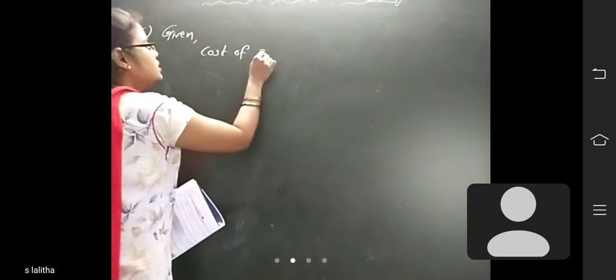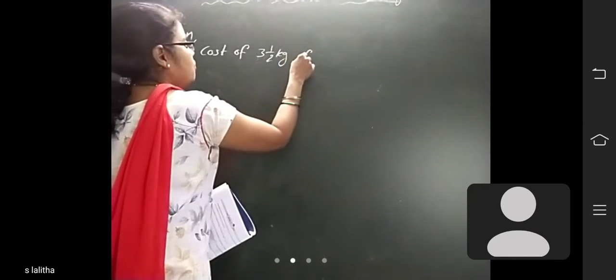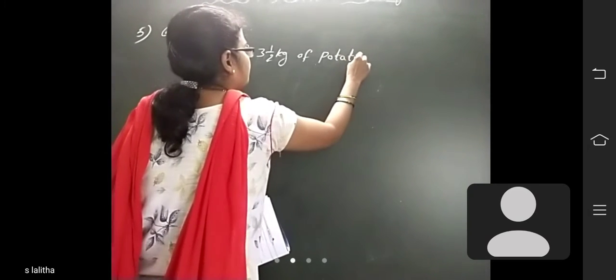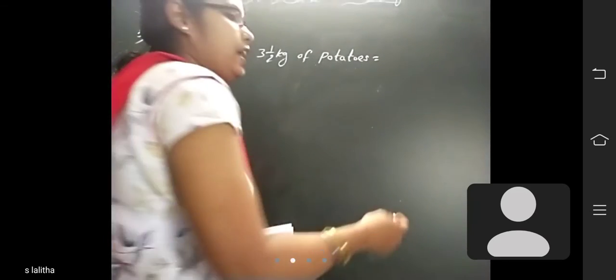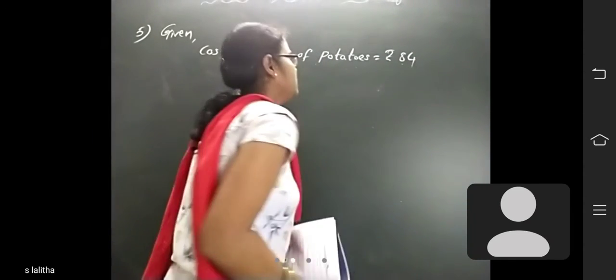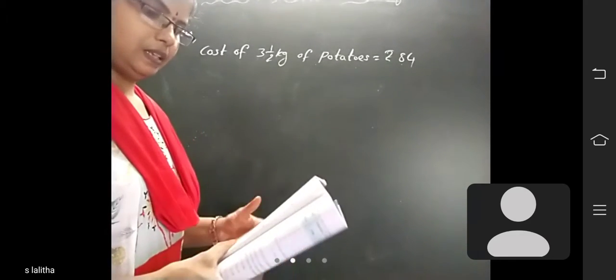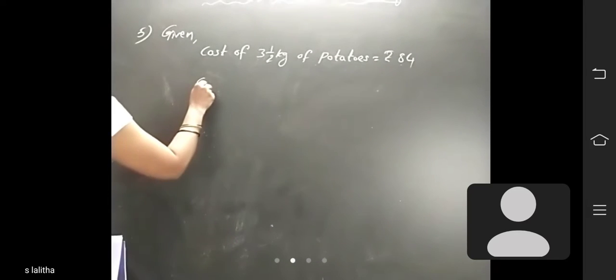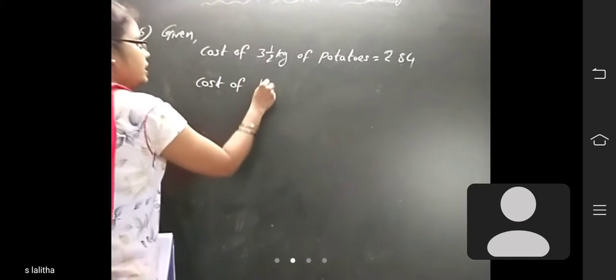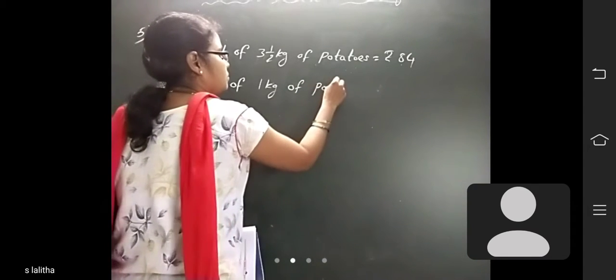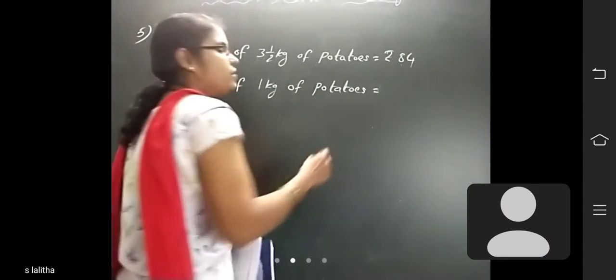For the 5th question, what is given here? Cost of 3 and a half cases of potatoes is 84 rupees. So cost of 3 and a half cases of potatoes is equal to 84 rupees. Now you have to find the cost of 1 kg of potatoes.